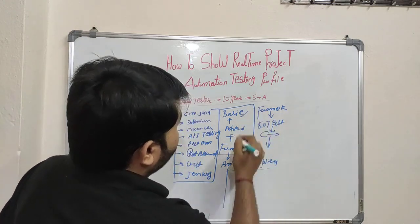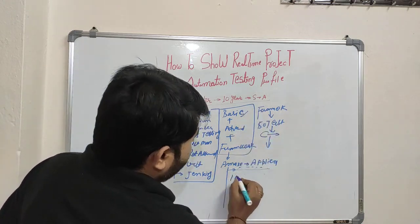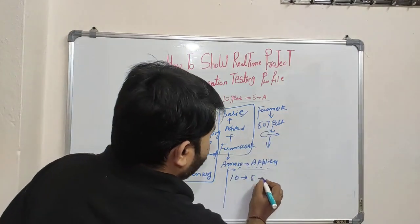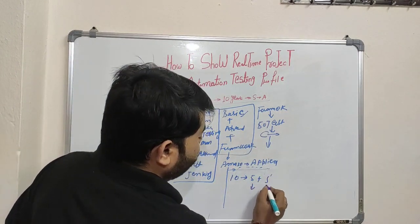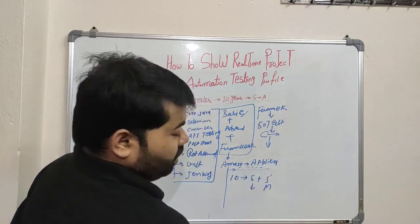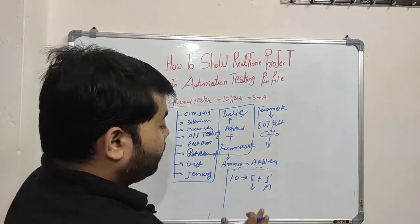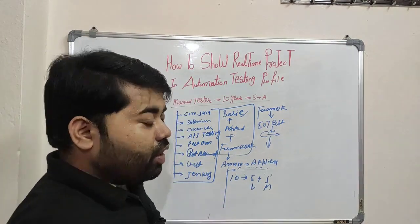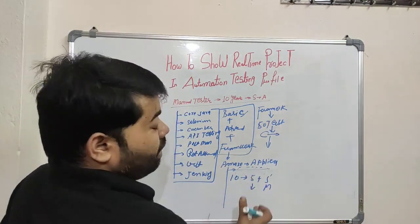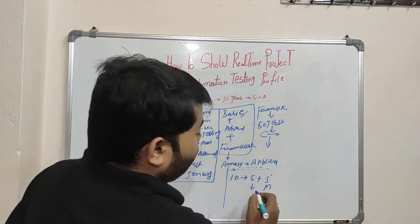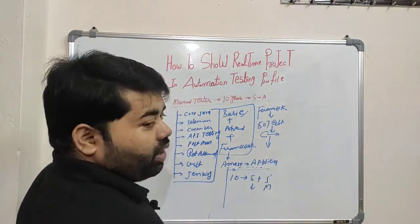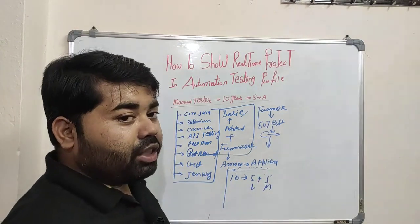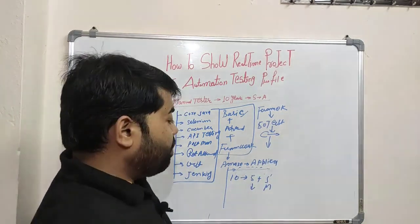Since you have worked for 10 years, you can divide your experience — for example, five years in automation and five years in manual testing. This depends on how comfortable you are and how much practice you have done. Do not blindly put more automation experience than you have practiced, otherwise you will get stuck.